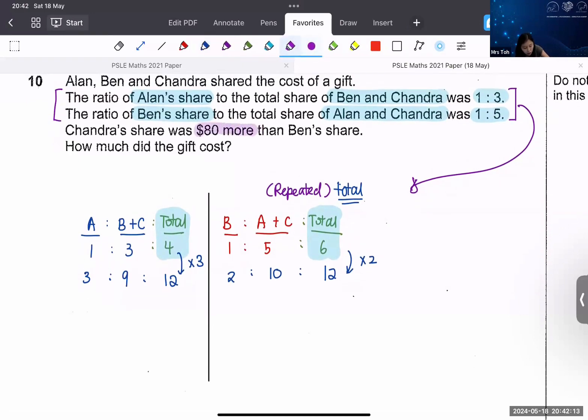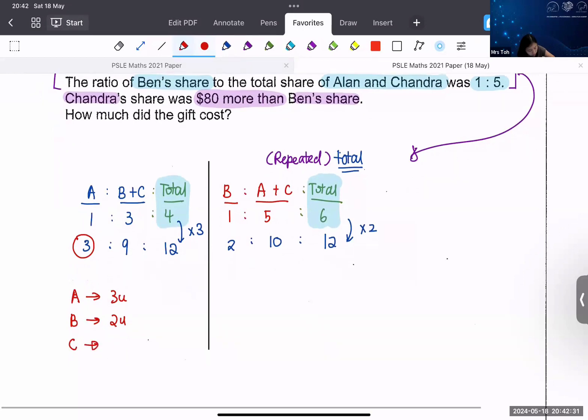Now of course they give you ratio they must give you value or something. Chandra's share was more than Ben's share. So, let's look. We have A. A is 3 units. I have B. B is 2 units. What can you tell me about C? How many units is C? Oh, yeah. I've had 9 already. Thanks for reminding me. Please tell me C how many? 7 units. Very good. How do I get 7? 9 minus 2 I get 7 or 10 minus 3 I also can get 7. Okay, thank you, Jared.